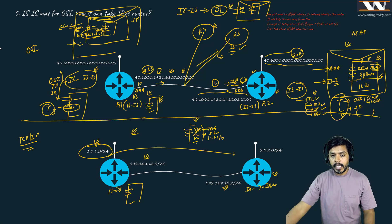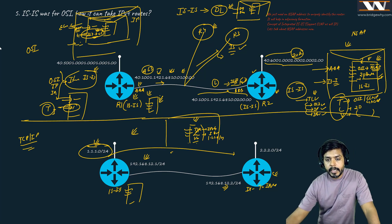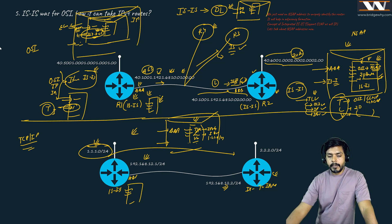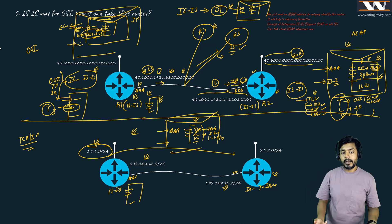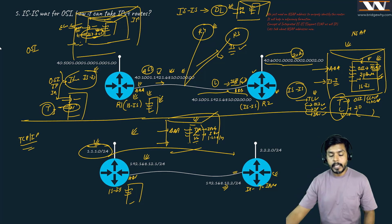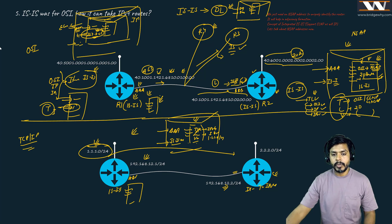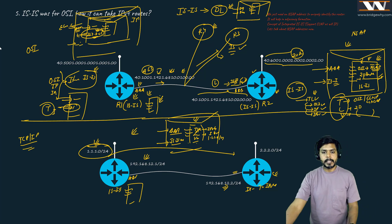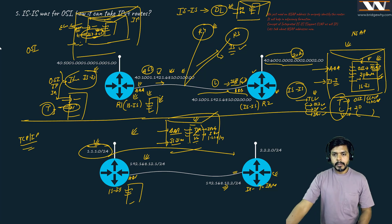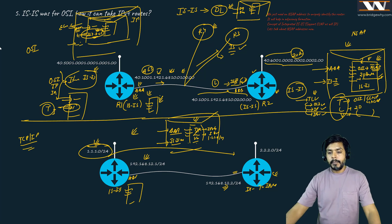This value will be encapsulated into Ethernet: source MAC is AAA and destination Ethernet is the ISIS multicast address. Whenever you enable ISIS on any router it starts listening on a special multicast MAC address specified for ISIS - we call it the ISIS MAC. You can see this on Wireshark messages as well.